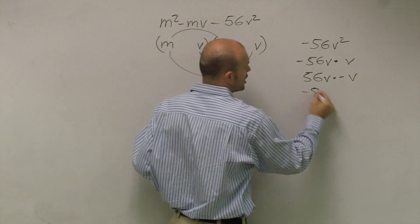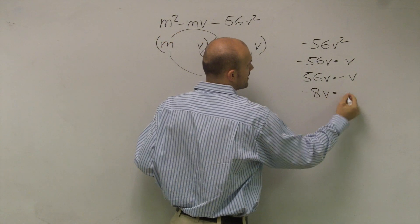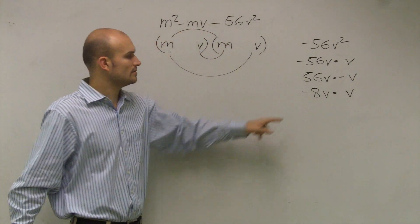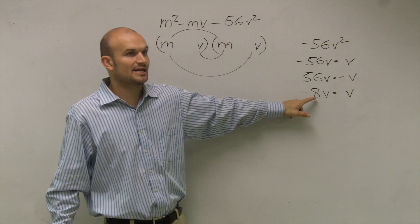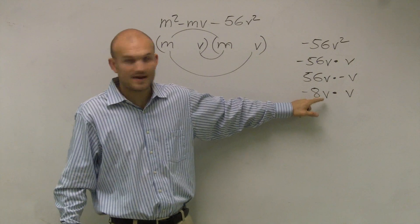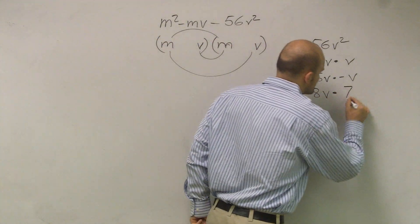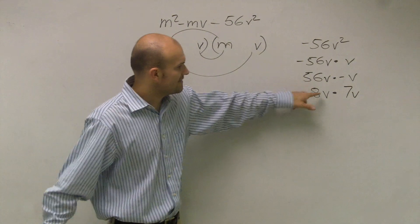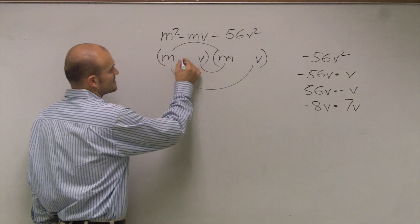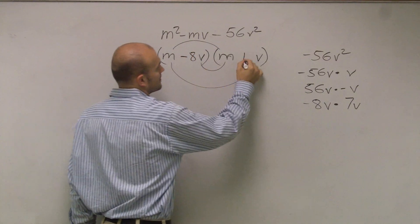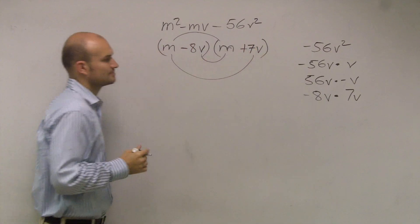Since this is negative, that means my larger term has to be the negative term. So since my middle term is negative, I'm going to want this to be a negative, the larger term, larger factor. What am I doing? 7v. Sorry. Negative 8v times 7v is a negative 56, right? Right. So what I can say is that's negative 8, and that's a positive 7.